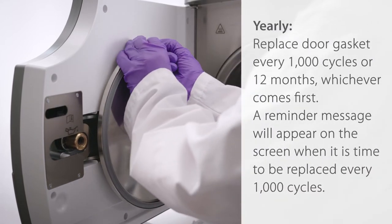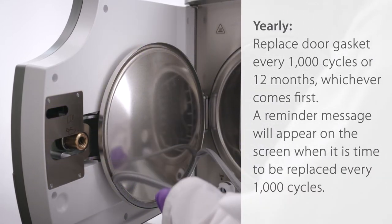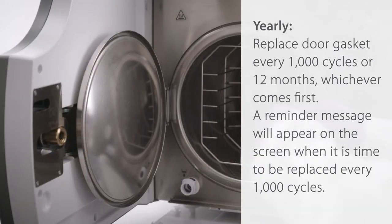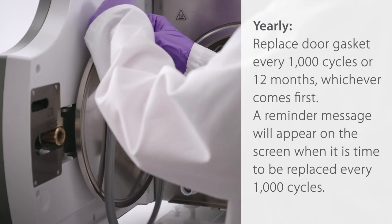Yearly. Replace the door gasket every 1,000 cycles or 12 months, whichever comes first. A reminder message will appear on the screen when it is time to be replaced every 1,000 cycles.